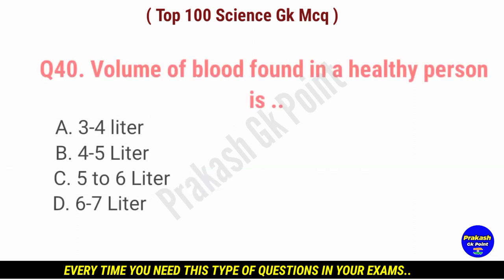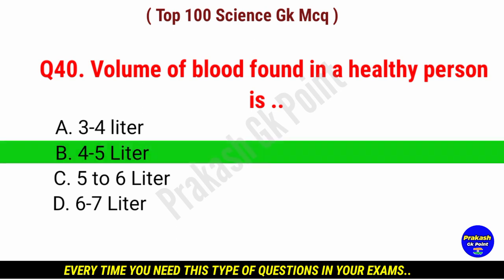Volume of blood found in a healthy person is dash. Answer: option B, four to five liters.